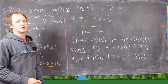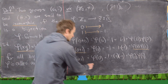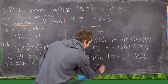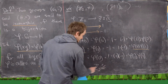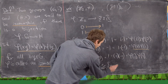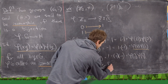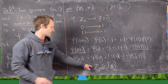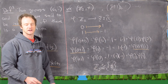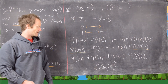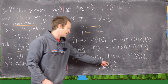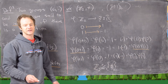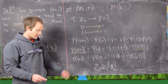So phi is an isomorphism and these two groups are isomorphic. We write Z₂ ≅ {+1, -1}. In fact, Z₂ is the additive cyclic group of order 2 and {+1, -1} is the multiplicative cyclic group of order 2 — they're the same.